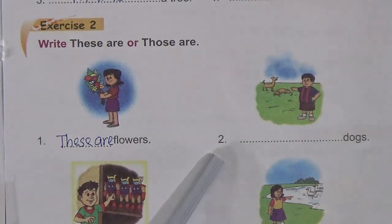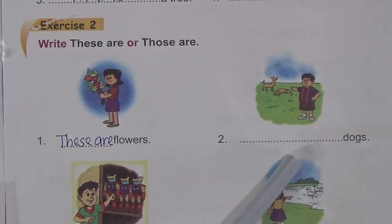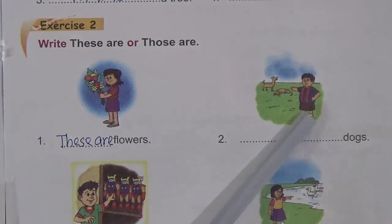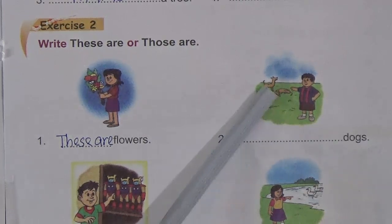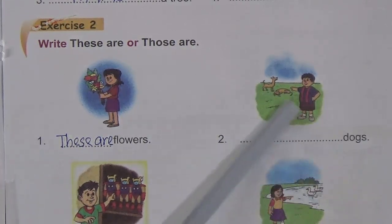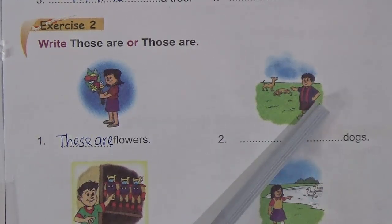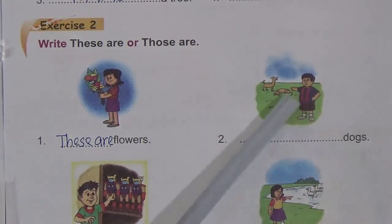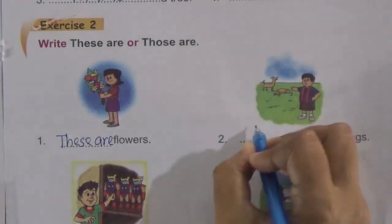Now look at number two. There are two dogs, and the dogs are far away from the boy. When something is far away we use 'that' or 'those'. And here there are two dogs, so we will use the plural form: 'those are'.